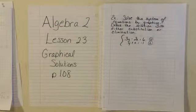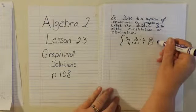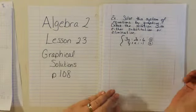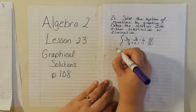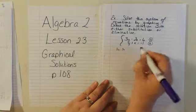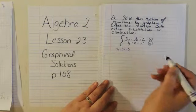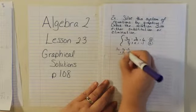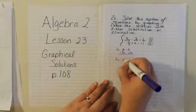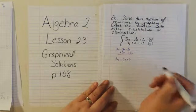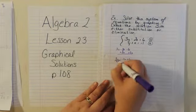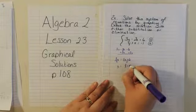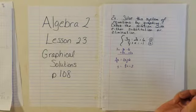We're going to start by solving both of these equations for y, so we can set up the slope-intercept form and graph them. So first we have 3y minus 2x equals 6. Let's move the x to the other side, so the y is by itself. We have 3y equals 2x plus 6. Divide the whole thing by 3, and y equals 2/3 x plus 2. 6 divided by 3 is 2.